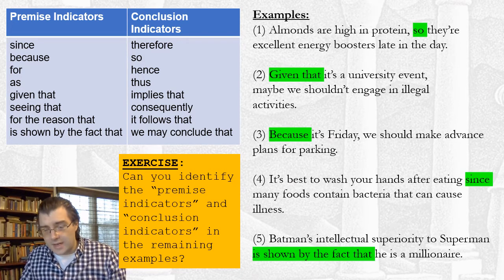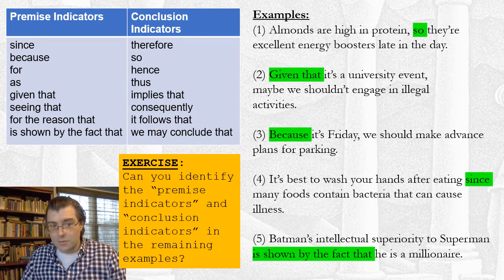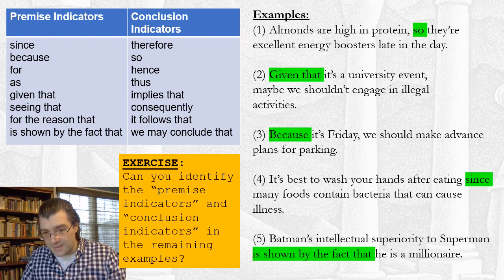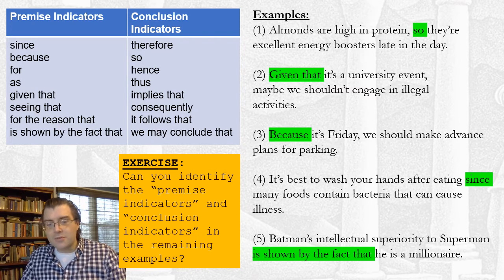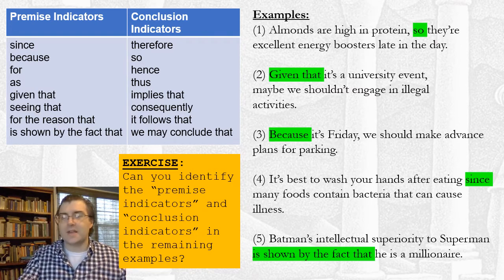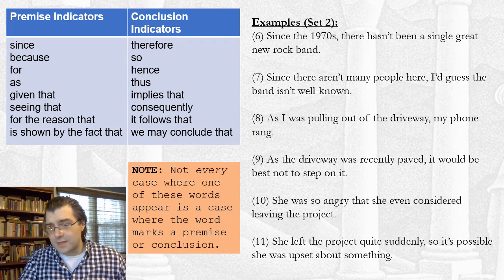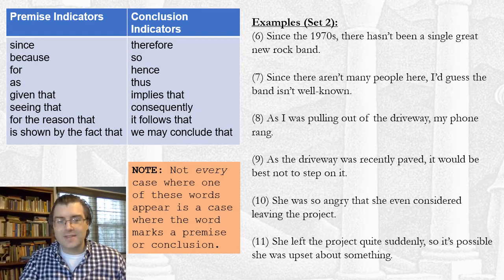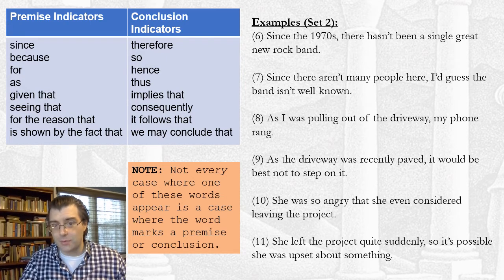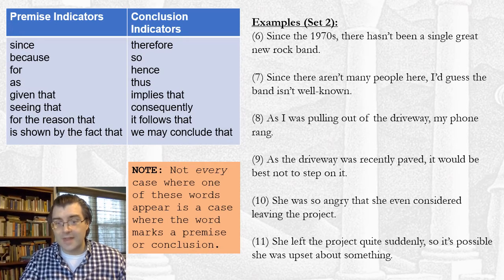Here are the correct answers. In each of these cases we have a premise indicator. In number three, 'because' is serving as a premise indicator since what follows it immediately is a premise. In number four, 'since' is serving as a premise indicator. And in number five, 'as shown by the fact that' is serving as a premise indicator. Now I want to emphasize that not every case where one of these words appears is a case where the word marks a premise or a conclusion.